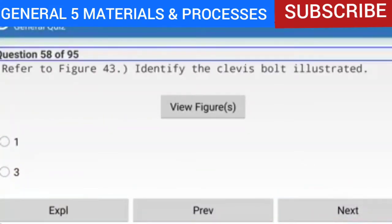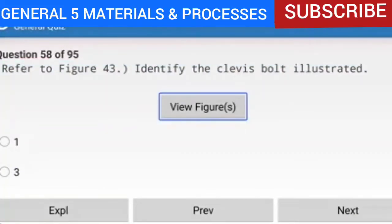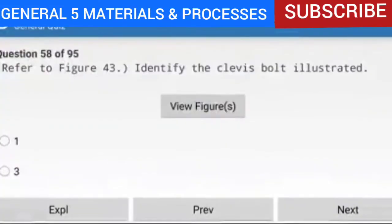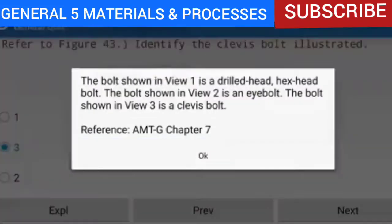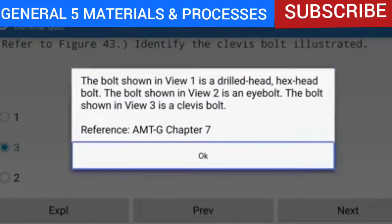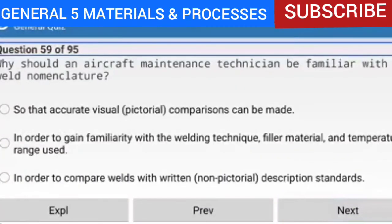Question 58 of 95: Refer to figure 43 — identify the clevis bolt illustration. The answer is view 3. The bolt shown in view 1 is a drilled head hex head bolt. The bolt shown in view 2 is an eye bolt. The bolt shown in view 3 is a clevis bolt.